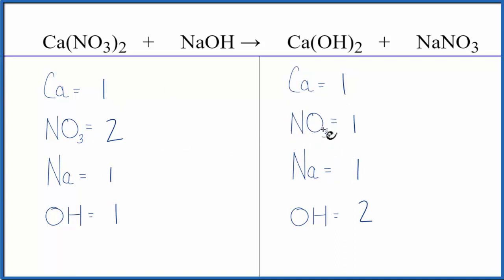Because now we can see we could put a two in front of the sodium nitrate, NaNO3. We have one nitrate times two, so those would be balanced. And then we'd have one sodium times two - two sodium atoms.